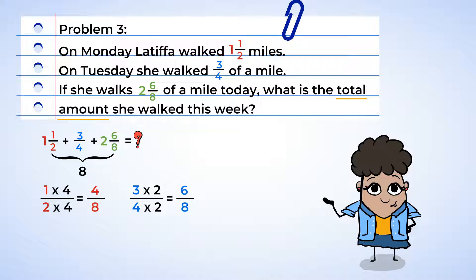And now it's addition time! We're going to keep the denominator of 8 and add all the numerators. So 4 plus 6 is 10, plus 6 equals 16, and that's 16 over 8. Now this is an improper fraction, so we're not going to leave it like that. 16 divided by 8 equals 2.